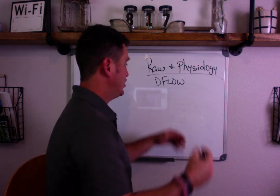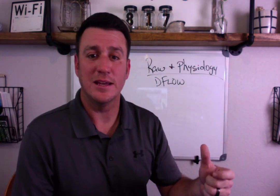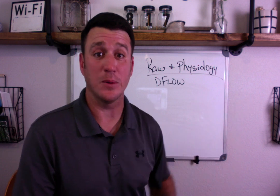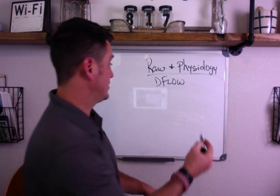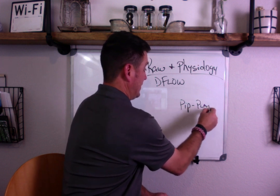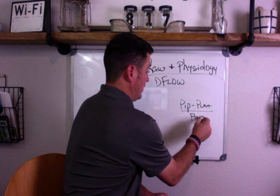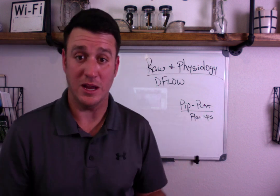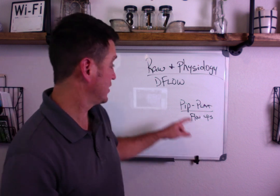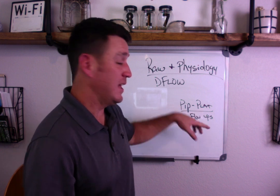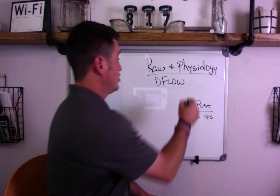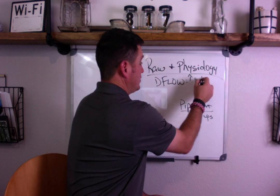Turn the flow up to 70 or 80 — your peak pressures will go up, your plateaus will stay the same. That's the first portion of the airway resistance formula: PIP minus plateau divided by flow in liters per second. When you do that, you're going to see that a greater flow results in a greater PIP. Your plateau stays the same, and your airway resistance calculation will show a higher level of resistance. So: higher flow equals higher airway resistance.